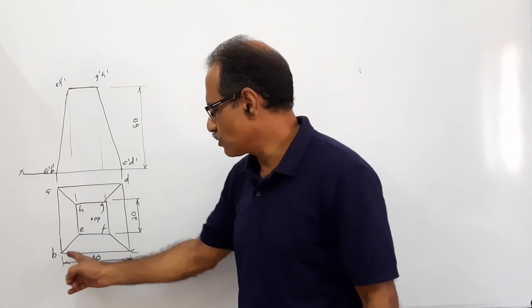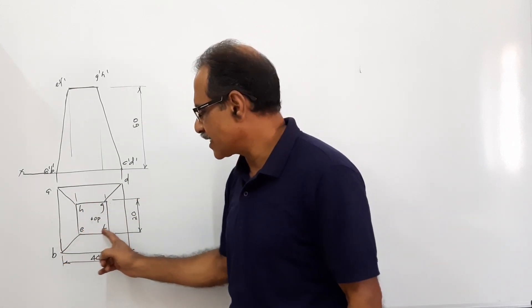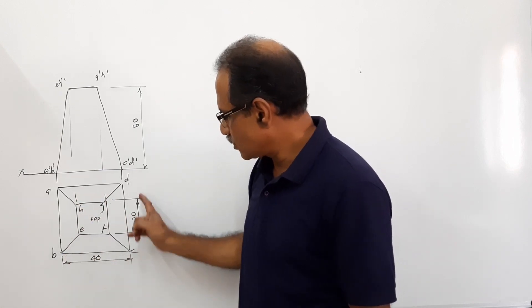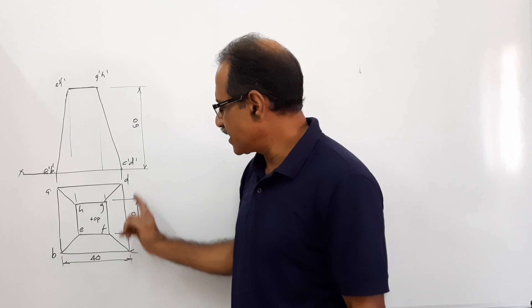The plan is a square 40 mm side. Inside that square there is another centralized square of 20 mm side. I have marked the dimensions 40, 20, A, B, C, D corners of the base.